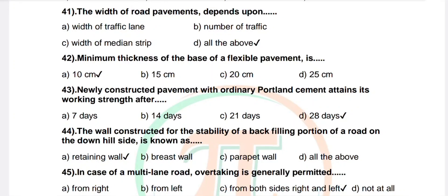Question 41: The width of road pavements depends upon — options: width of traffic lane, number of traffic lanes, width of median strip, all of the above. Correct answer: all of the above.